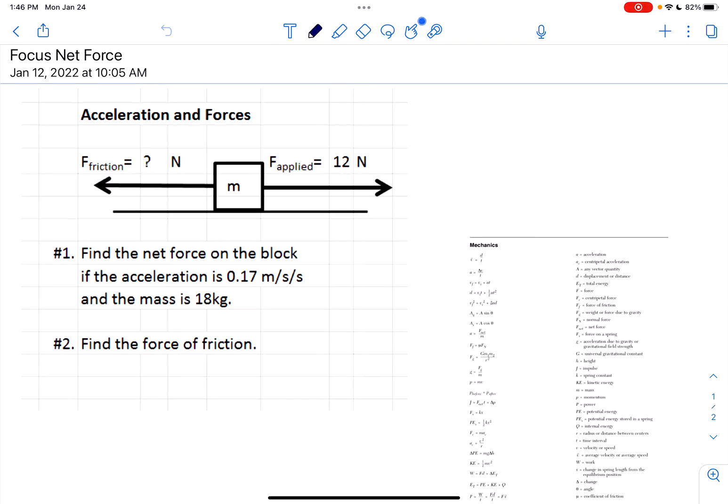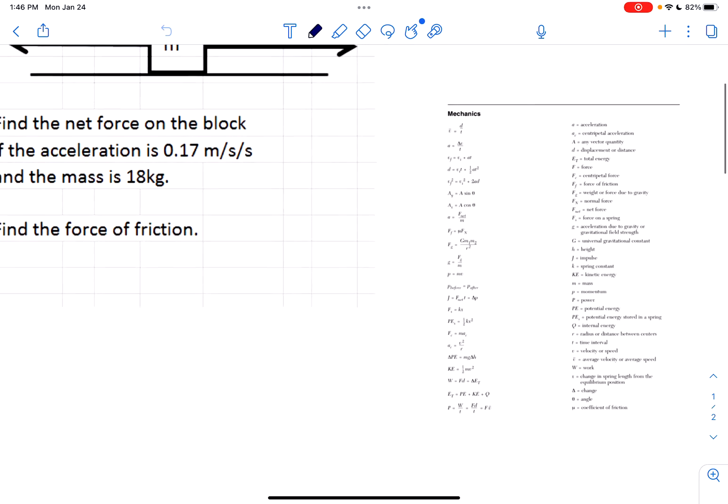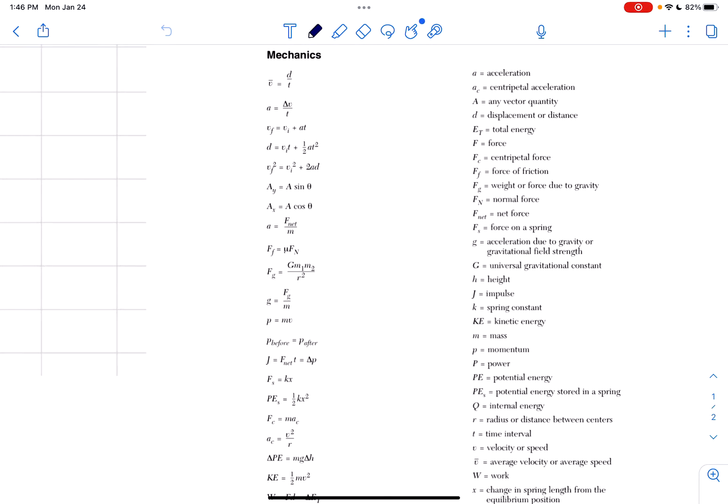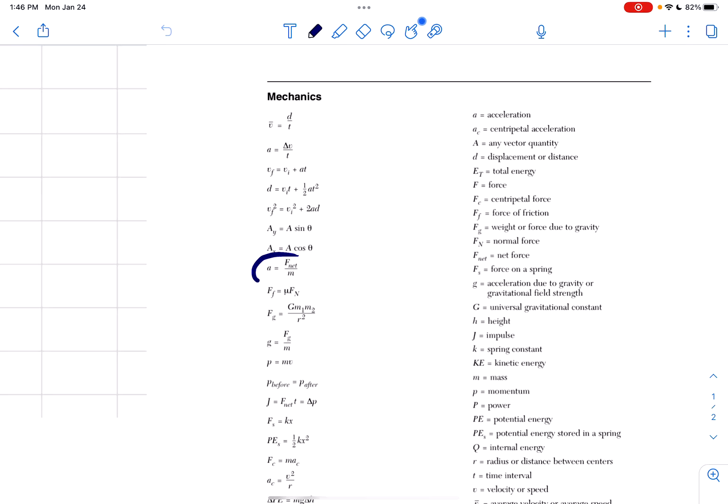This is how we do the focus do now on net force. Net force is a really important equation, especially for unit 3. If we look at the reference table over here, they've written it with acceleration equals F net divided by M. This is also called Newton's second law. I don't expect you to know which law it is, but I do expect you to know how to use this equation. We see that mass and acceleration have an inverse relationship, but if we have more net force we're gonna have a bigger acceleration.